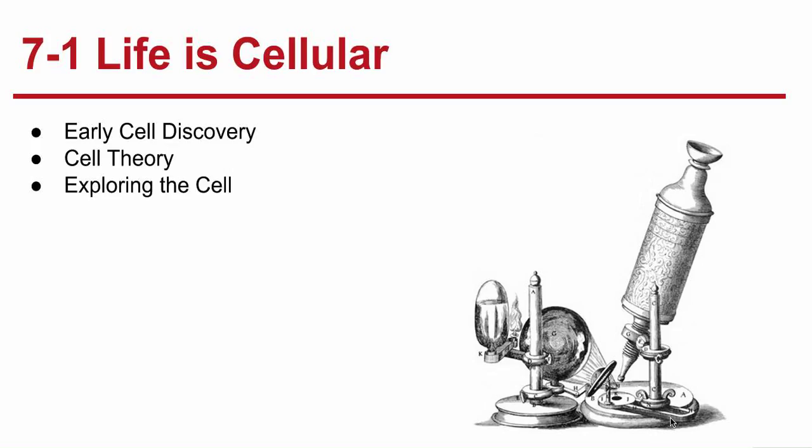Section 7-1: Life is Cellular — Early Cellular Discovery. Cells were discovered with the invention of the microscope, and it was not until the mid-1600s that scientists used microscopes to observe living things. The first scientist to discover or see cells was Robert Hooke, and he saw cells in a section of cork.